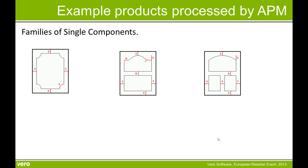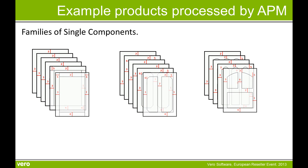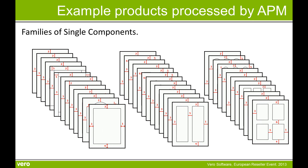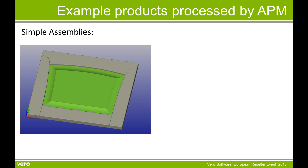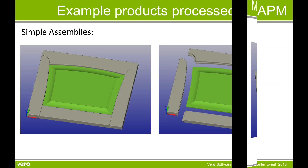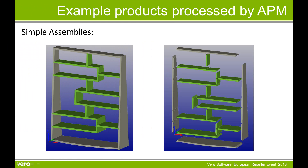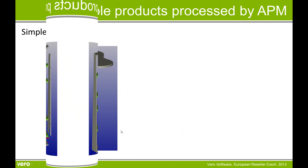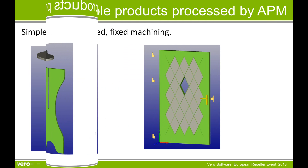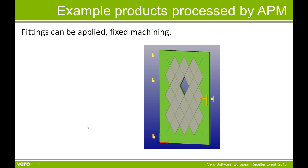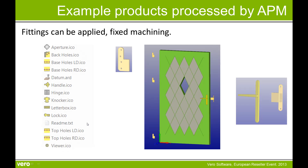We'll run through a few example products that have been processed by some of our customers using APM. You have families of single components such as MDF doors — this can be used for bedroom, bathroom or kitchens. We also have customers who are using APM to produce simple assemblies including shelving units and other furniture assemblies such as tables. Fittings can be applied to parametric assemblies and single components, including things like hinges, locks, handles and any fixed machining.